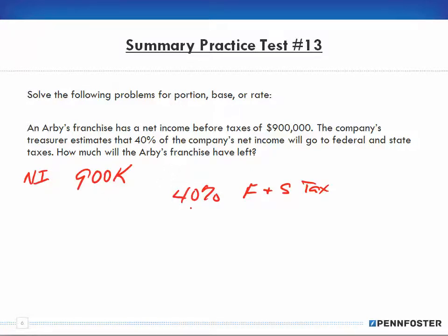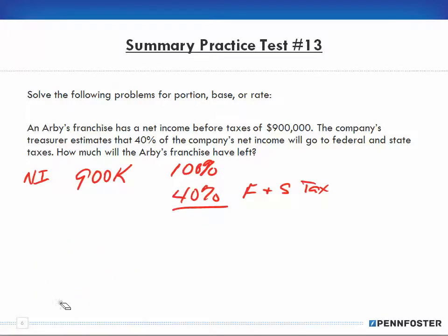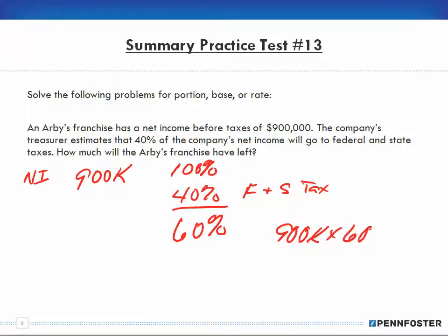You can go about this two different ways. The net income is $900,000 and that represents 100%. If I take out 40%, that means I have 60% left over. So I take $900,000 and multiply it by 60%, and that gives me $540,000 as my final answer.